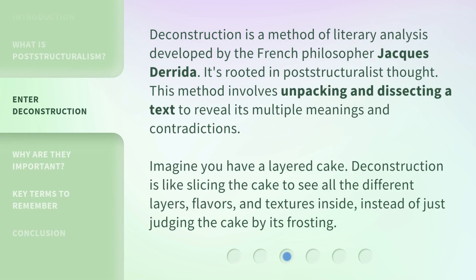Deconstruction is a method of literary analysis developed by the French philosopher Jacques Derrida, rooted in post-structuralist thought. This method involves unpacking and dissecting a text to reveal its multiple meanings and contradictions. Imagine you have a layered cake — deconstruction is like slicing the cake to see all the different layers, flavors, and textures inside, instead of just judging the cake by its frosting.